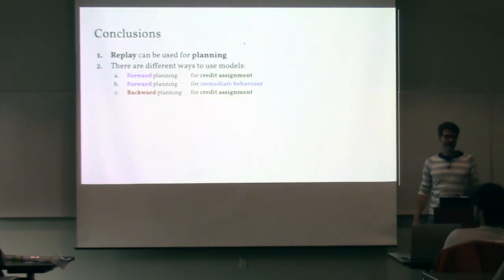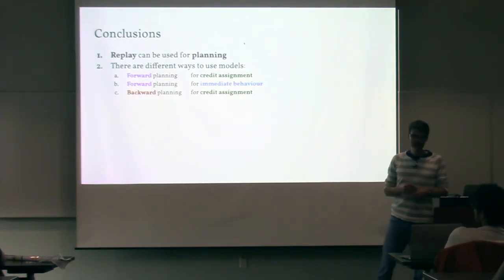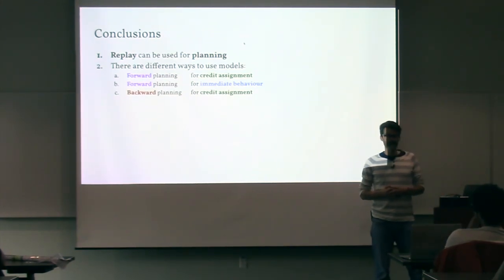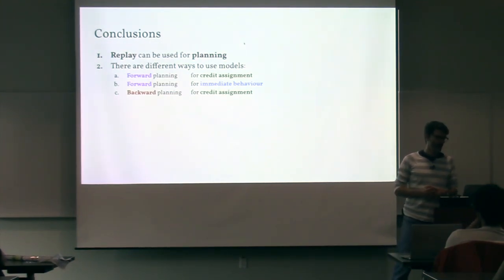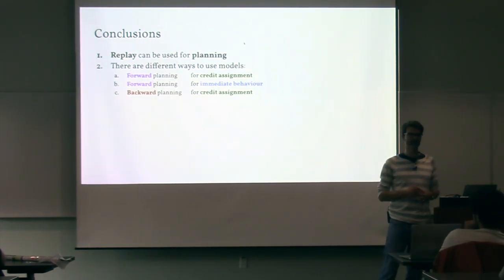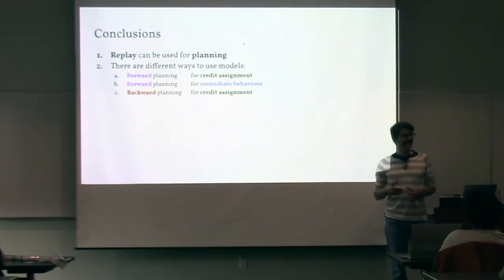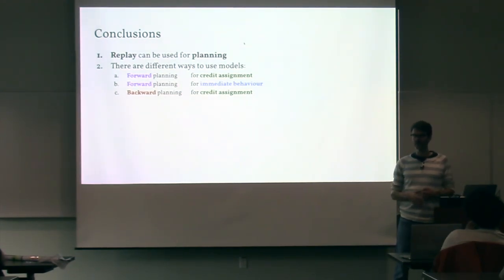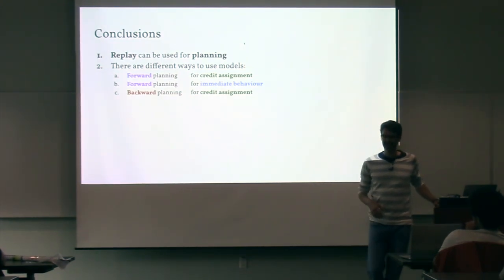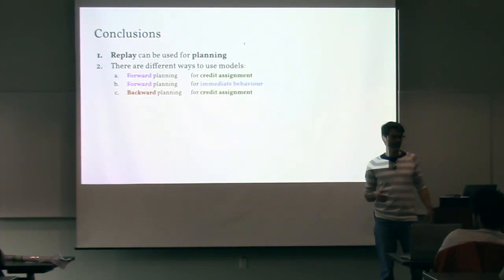Conclusions: consider replay as something you can use to plan — it's okay to call that planning, even if it's limited. If you want to use a parametric model, there are a few ways: planning for credit assignment (though maybe not the most effective use, and replay can serve that role), forward planning for behavior (quite effective — lots of model predictive control literature supports this), and backward planning for credit assignment. None of these are particularly new; I just wanted to do a careful comparison and develop intuitions about when to expect them to help.